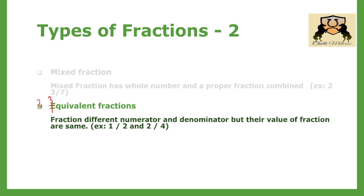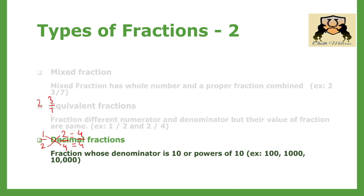Equivalent fractions: fractions that have different numerators and denominators but the same value are called equivalent fractions. For example, 1 by 2 and 2 by 4 have different numerators and denominators, but their values are equal. When you cross-multiply: 1 multiplied by 4 equals 4, and 2 multiplied by 2 equals 4. Since 4 equals 4, they are equivalent fractions.